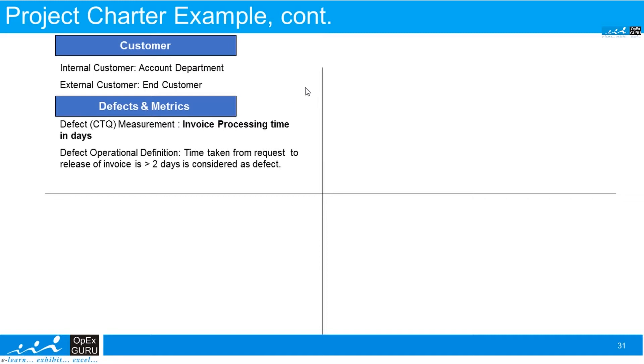From the request to release of the invoice, then it is considered as a defect. What is the baseline period that we have considered here? We have collected the data from January 15 to July 2016, and it shows that on average it is five days.